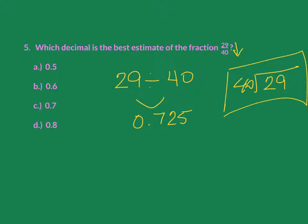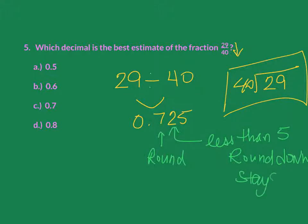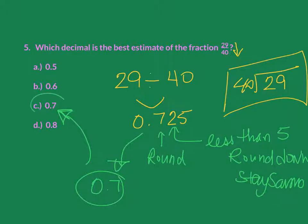Now if we look at all of our answers, they're all in the tenths place. So that simply means we need to round this. So I know I need to round it to my tenths place. I'm going to round it to the 7. So that means I need to look at my 2. And that 2 is less than 5. So therefore, I'm going to round it down. Rounding down simply means I leave it the same. Stays the same. So therefore, if I rounded it, it's going to be 0.7. And look at that. There it is. There's my answer, C.